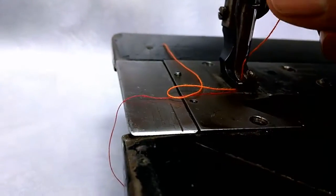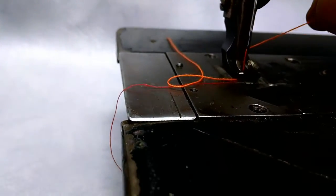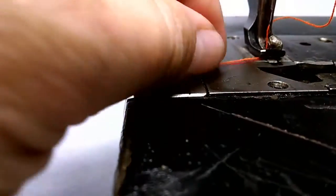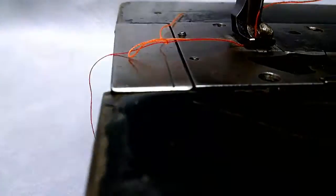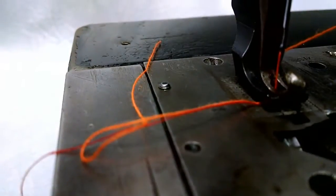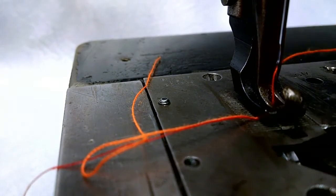Now, one of the differences is that this machine threads from right to left, and a lot of industrial sewing machines thread from left to right.